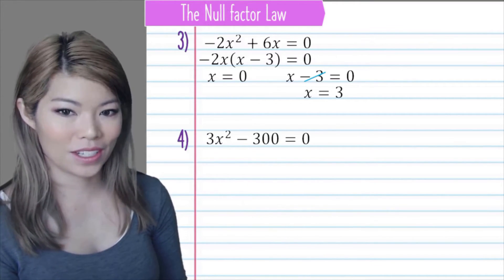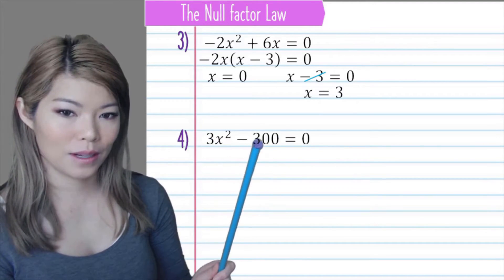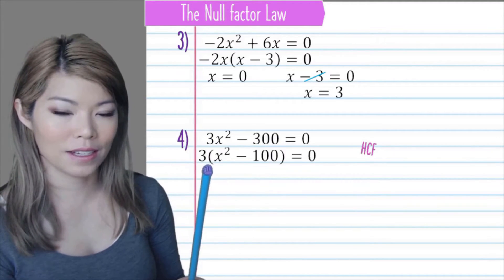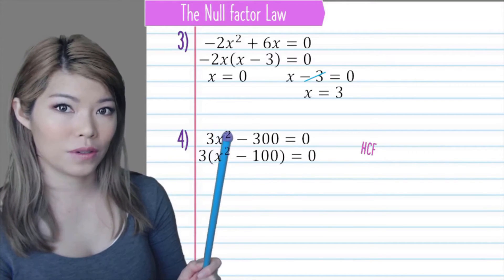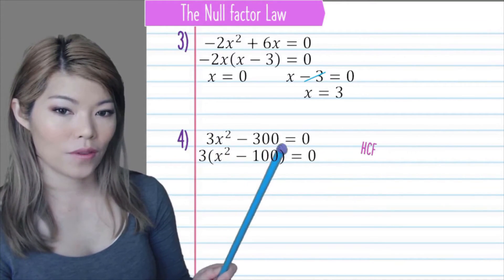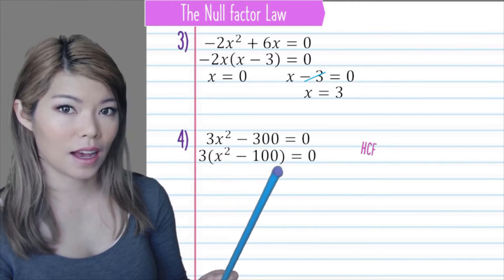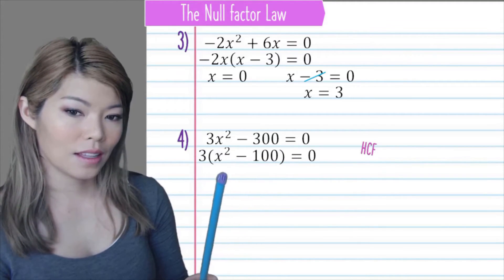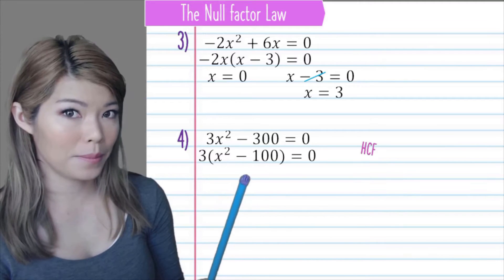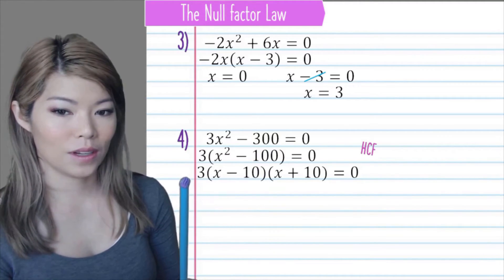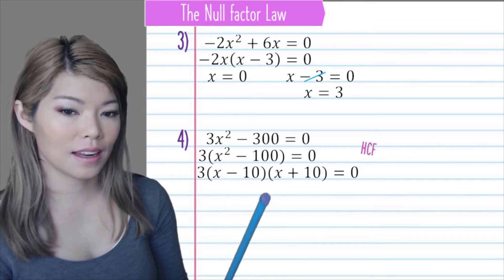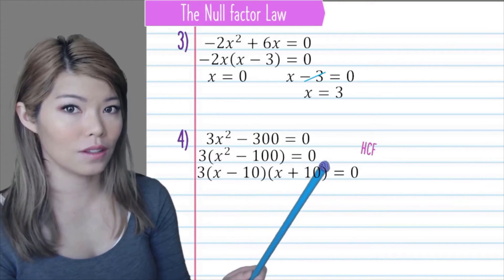Next question. Again, we can see a highest common factor to be 3. So let's take the 3 out. So 3 is now outside. 3 times what is 3x squared. That's x squared. And then 300 divided by 3 gives us 100. Now we notice x squared minus 100 is a perfect square. And the square root of 100 is 10. So we're left with 3x minus 10x plus 10 equals 0.